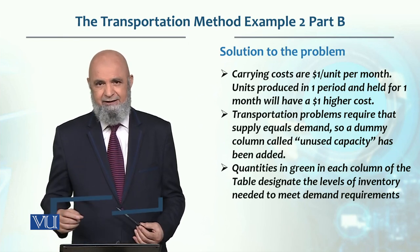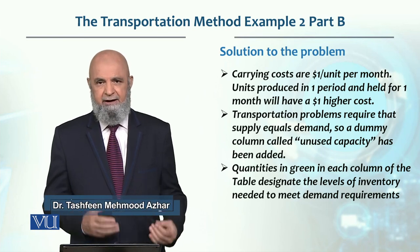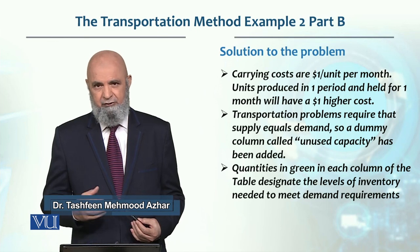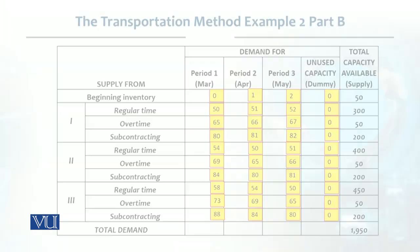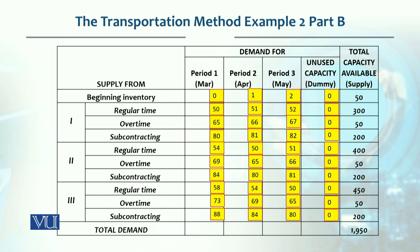Here, at the end, there are green figures showing the demand which we need to meet from different options. We have a table which we discussed in Part A. The options available to us represent the capacities of each option available.